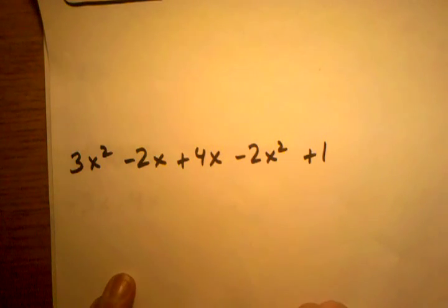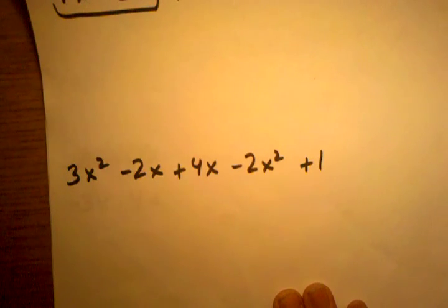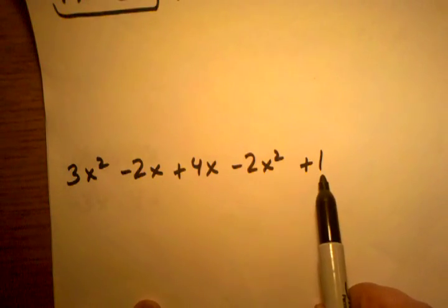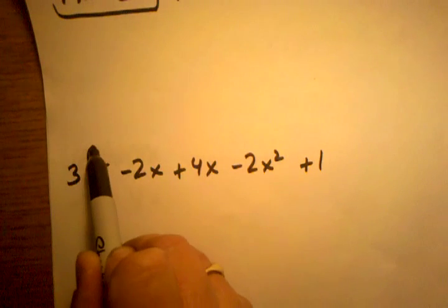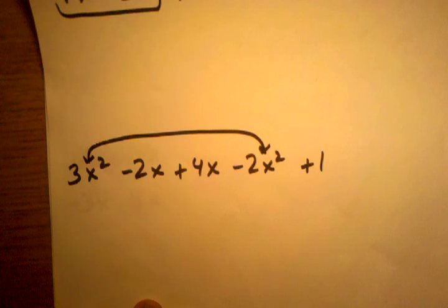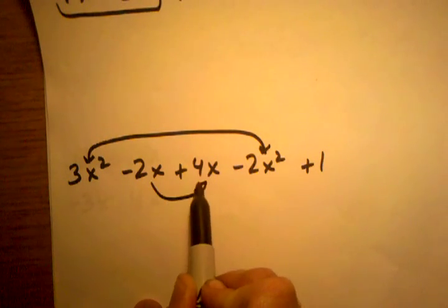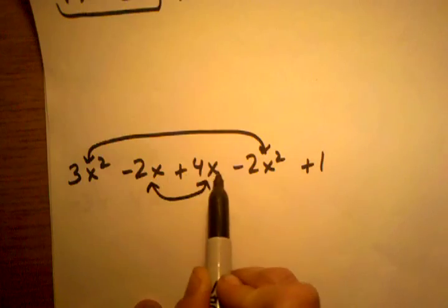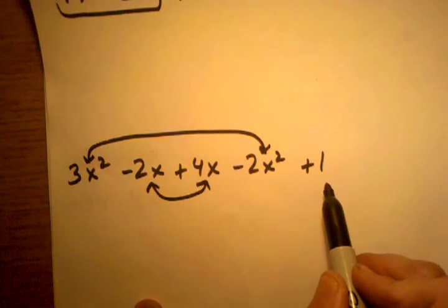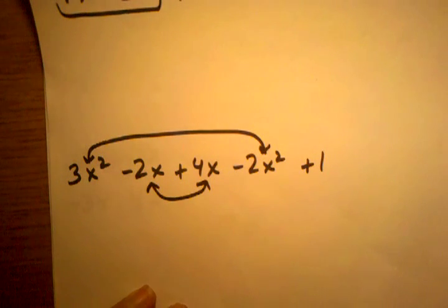Now we have 3x squared minus 2x plus 4x minus 2x squared plus 1. Here we have to think about like terms, kind of like we did in the previous problem where we can only add x's and then the ones had to be added separate. Here we have x squares and we have x's and we have some ones. So this x squared and this x squared can be combined in some way because they're considered like terms. These two terms just have x's in them. They can be combined. So they're similar. They use the same kind of tile. And then we have just the ones. That's going to have to be by itself. So let's start off with the x squares.